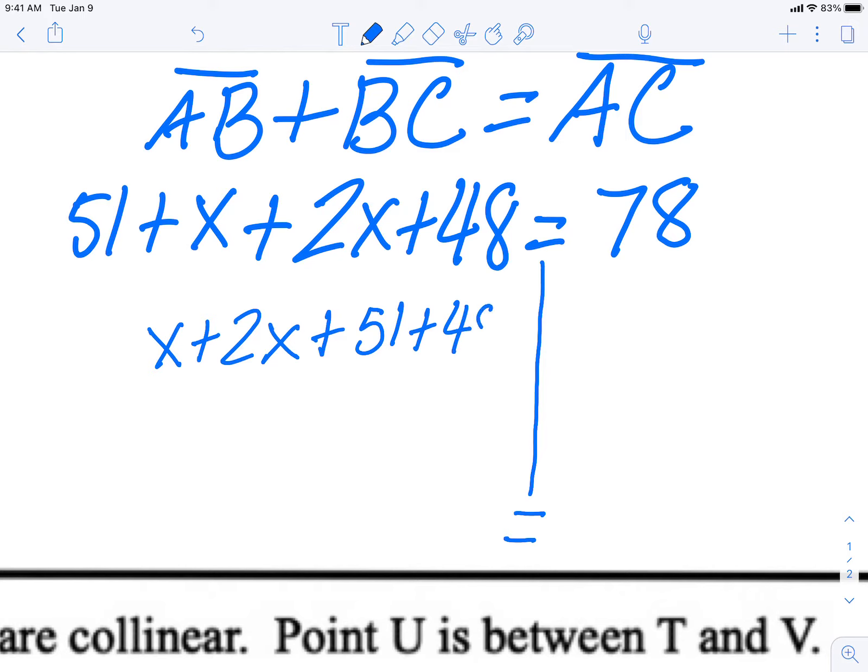So now it's easy: x plus 2x is 3x, 51 plus 48 is a positive 99. So now this means that I need to bring 99 over this way, and I do that by crossing it out and doing minus 99.